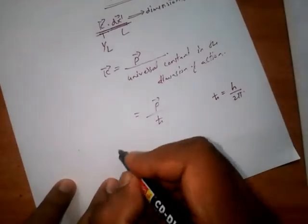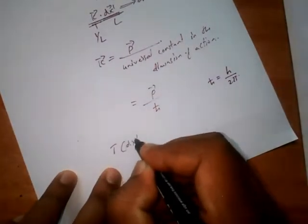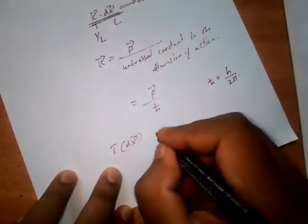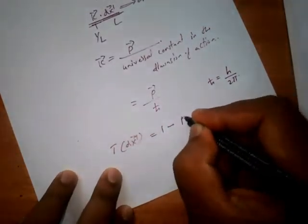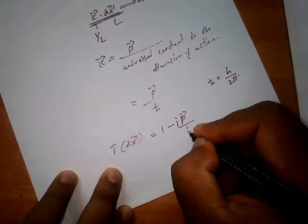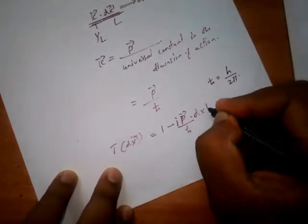So we can write the infinitesimal translation operator T(dx') = 1 - ip·dx'/ℏ. So we got the form.